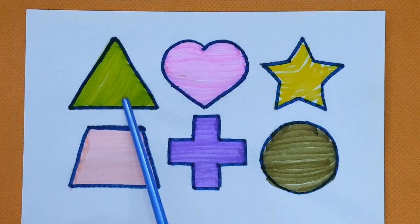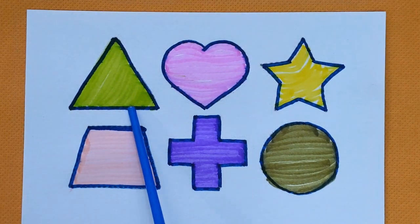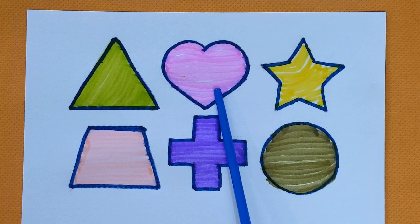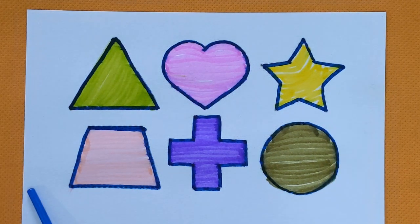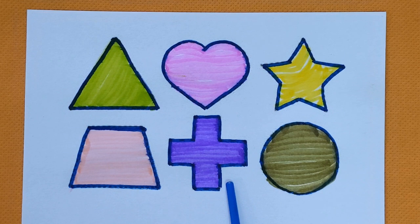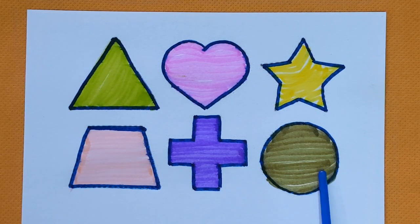Let's see the colors again. This is triangle shape, light green color. Heart, purple color. Star, yellow color. Trapezoid, pink color. Cross, violet color. And this is circle shape with olive green color.